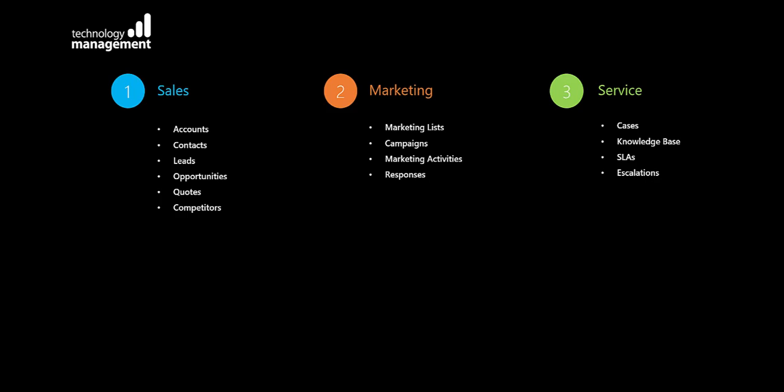The third is service. This area focuses on maintaining customer satisfaction and loyalty by tracking complaints, questions and requests and ensuring that they are resolved in an efficient and timely manner. The service area contains a powerful knowledge-based feature designed to encourage employees to share knowledge and help each other resolve customer issues. Finally, you can also set up service level agreements and escalations to help ensure you do what you say you're going to do, which will ultimately build trust with customers.